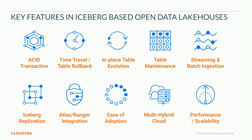It has ACID transaction support. It has time travel and the ability to roll tables back to a previous point in time. It has in-place table evolution — you can very quickly and easily add or delete columns from the table schema without rewriting all of those files. You can do better table maintenance to keep those tables lean and healthy, and better streaming and batch ingest, which addresses the small files problem seen with Hive table format. We also have Atlas and Ranger integration with Iceberg, giving us very good ease of adoption, working across clouds and on-premises, and it's highly performant and scalable.